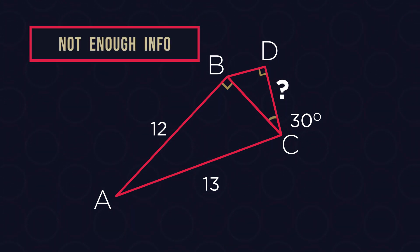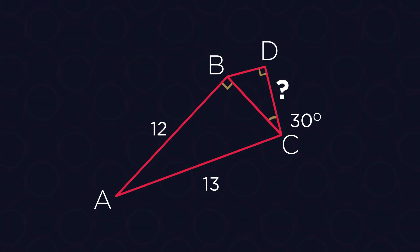We don't have enough information to find DC from triangle BCD because we only know one angle and none of the lengths of the sides. So our first step is to find more information about this triangle.